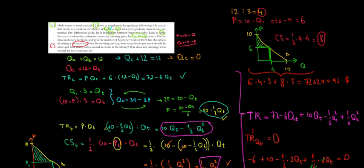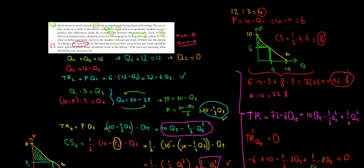If we had worked only as a clerk for 12 hours, we would have made 6 × 12 = $72. Tutoring with a two-part tariff yields $96, which is clearly better. We proved with calculus and optimization that focusing exclusively on tutoring and charging the consumer surplus is the superior option.